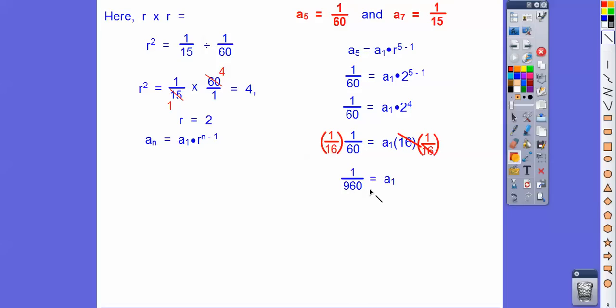So a sub 1 is 1 over 960. So everything's ready to plug into our formula, because it said write a rule. So this 1 over 960 is going to go there. This is 2, and then that's it right there, you guys. So there's our rule right there. Piece of cake. All right, let's try another one, you guys.